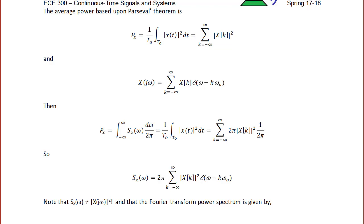Recall also that we found the Fourier transform in terms of the Fourier series as X(jω) equal to the summation from k = −∞ to ∞ of x[k] δ(ω − kω₀). We're going to use those two equations in order to solve for the power spectrum S_x(ω). So p_x equals the integral from −∞ to ∞ of S_x(ω) dω over 2π, copied from the prior page.